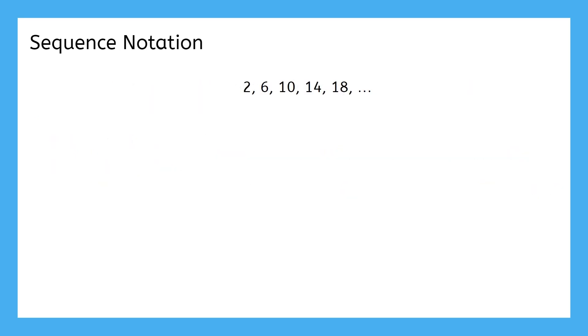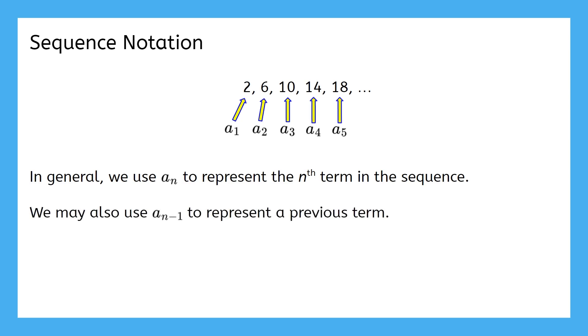The terms of a sequence are named by their place in the sequence, often as an a with a subscript. For example, this term is a1, this term is a2, and so on and so on. You can also say a sub one, a sub two, and so on and so forth. In general, we use a sub n, or sometimes just a_n, to represent the nth term in a sequence. We can also use a sub n minus 1 to represent a previous term, which we're going to see in the examples here.